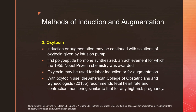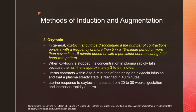Oxytocin may be used for labor induction or augmentation, and ACOG recommends that fetal heart rate and contraction monitoring be done with oxytocin use. Oxytocin should be discontinued if contractions persist with a frequency of more than 5 in a 10-minute period, or more than 7 in a 15-minute period, or with a persistent non-reassuring fetal heart rate pattern. When oxytocin is stopped, its concentration in plasma rapidly falls because the half-life is just 3 to 5 minutes. The uterus contracts within 3 to 5 minutes of beginning an oxytocin infusion, and plasma steady state is reached in about 40 minutes.